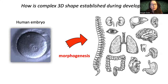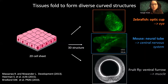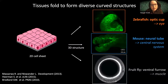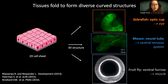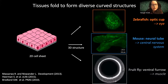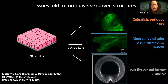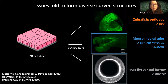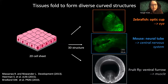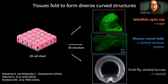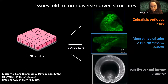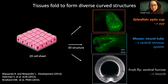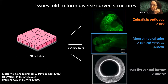Tissues can build shape in many different ways, including budding or branching. But one really common strategy that tissues use to build 3D shape across organisms is the process of tissue folding. Here are three different examples of 2D cell sheets that bend and fold in the zebrafish, mouse, and fruit fly to build diverse structures: the optic cup, which later forms the eye; the neural tube, which forms the central nervous system in the mouse; and the ventral furrow in the fruit fly, which internalizes a group of cells into the center of the embryo to later form muscle. This fruit fly ventral furrow fold is what I'll be discussing throughout my talk.